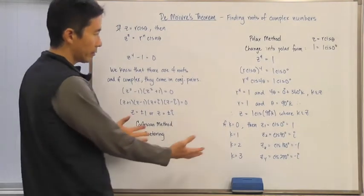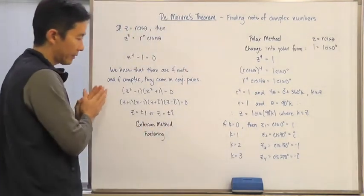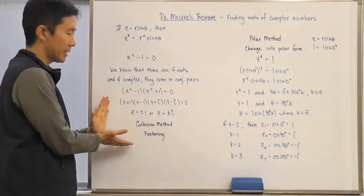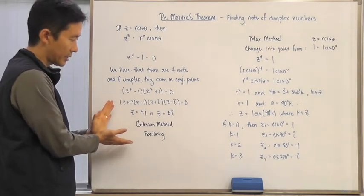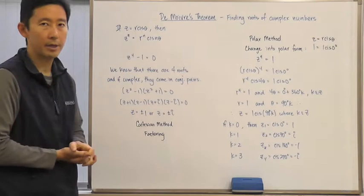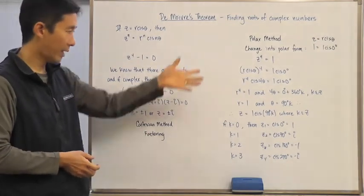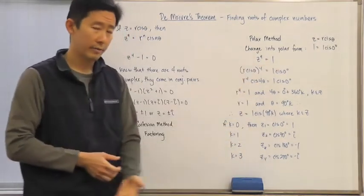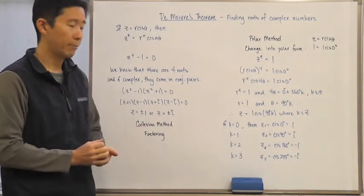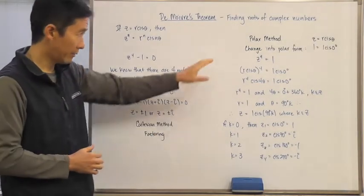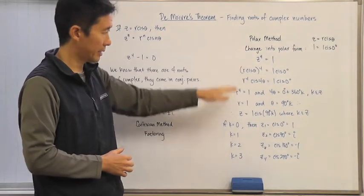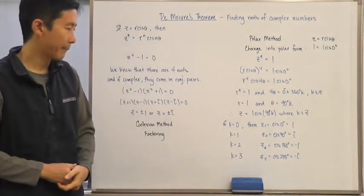So, what we know is that the polar form here is going to give us exactly the same consistent solutions as we did with the Cartesian method. But, of course, the advantage to this is that sometimes our initial equation will not be factorable. So, if it is not factorable, then that's the route that we want to take.